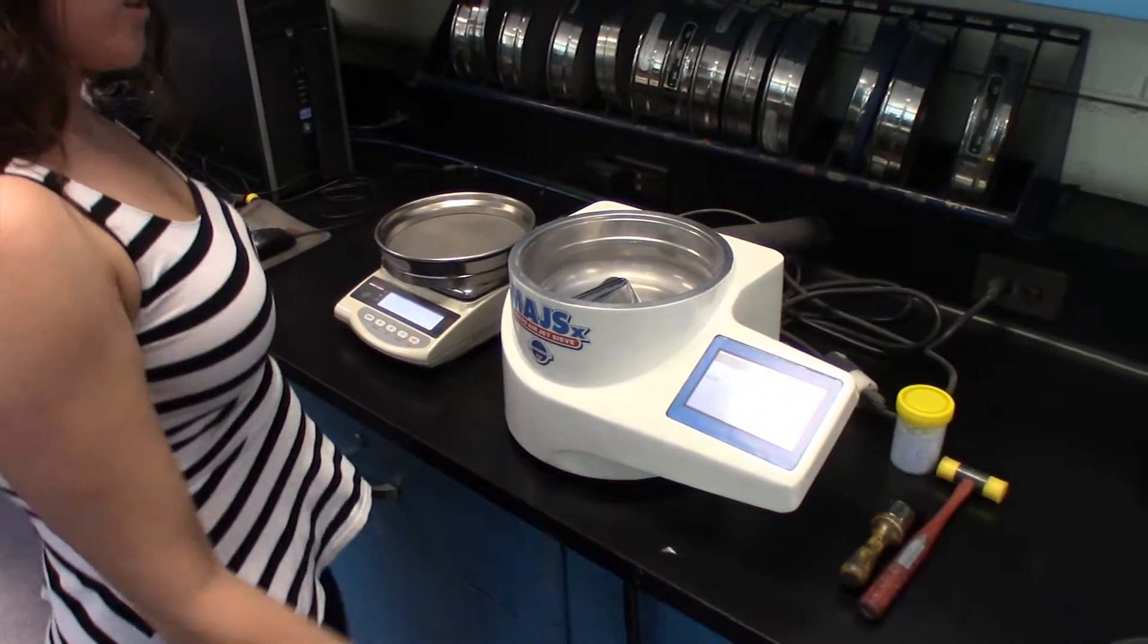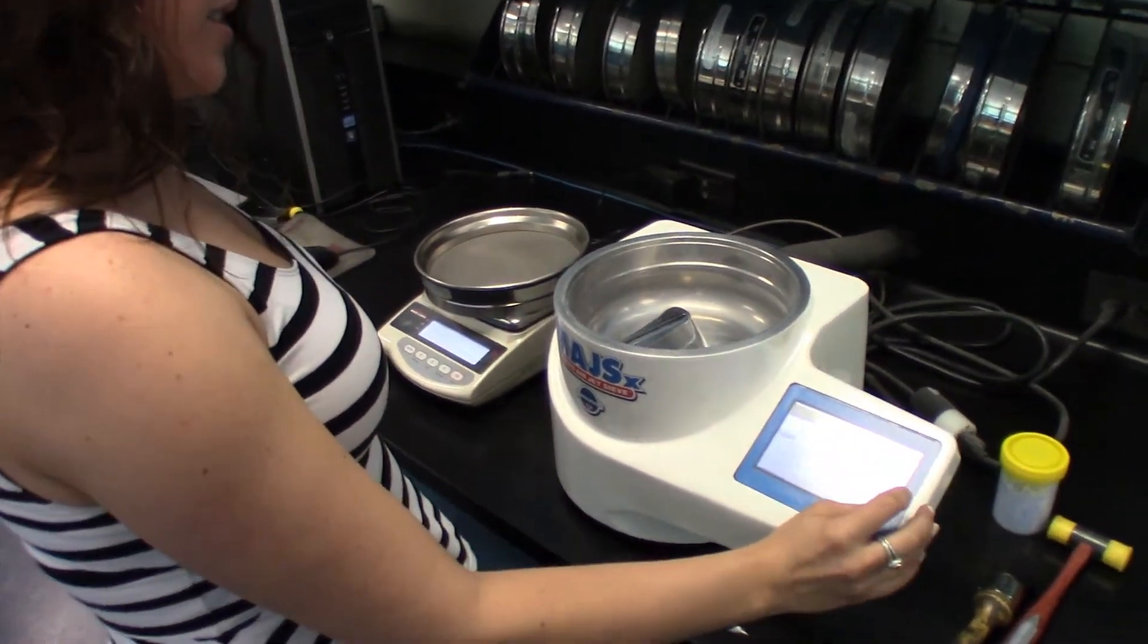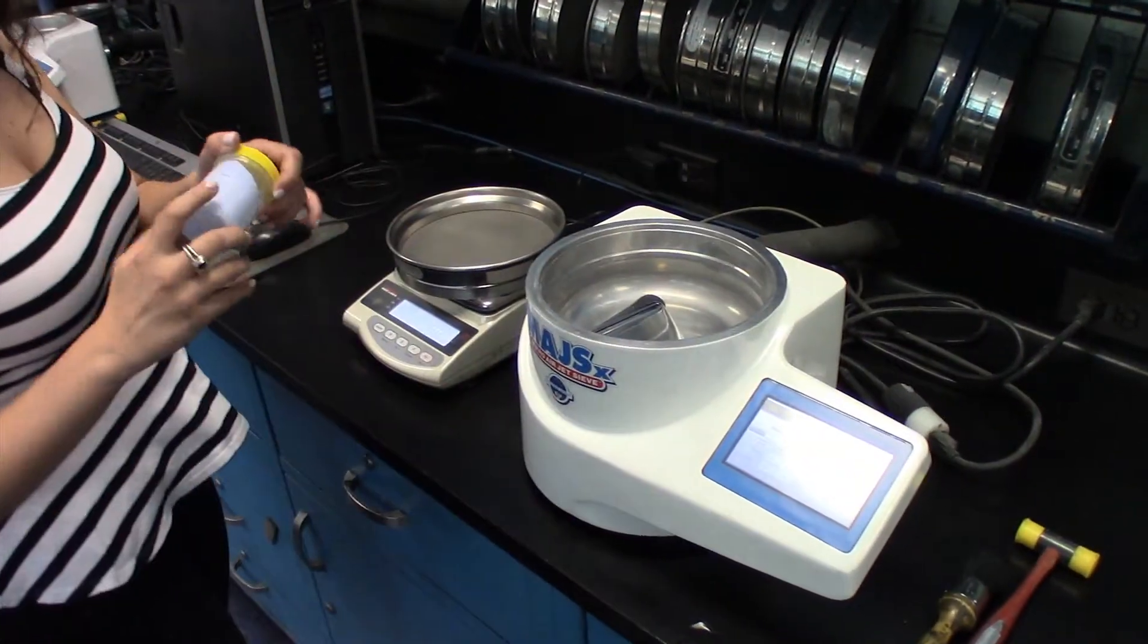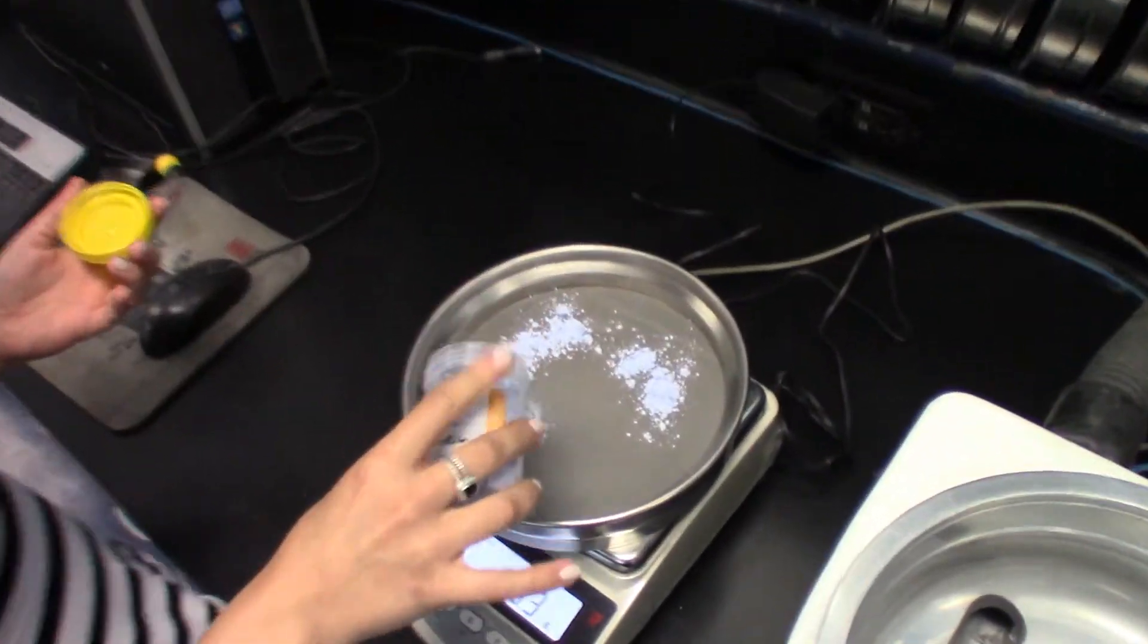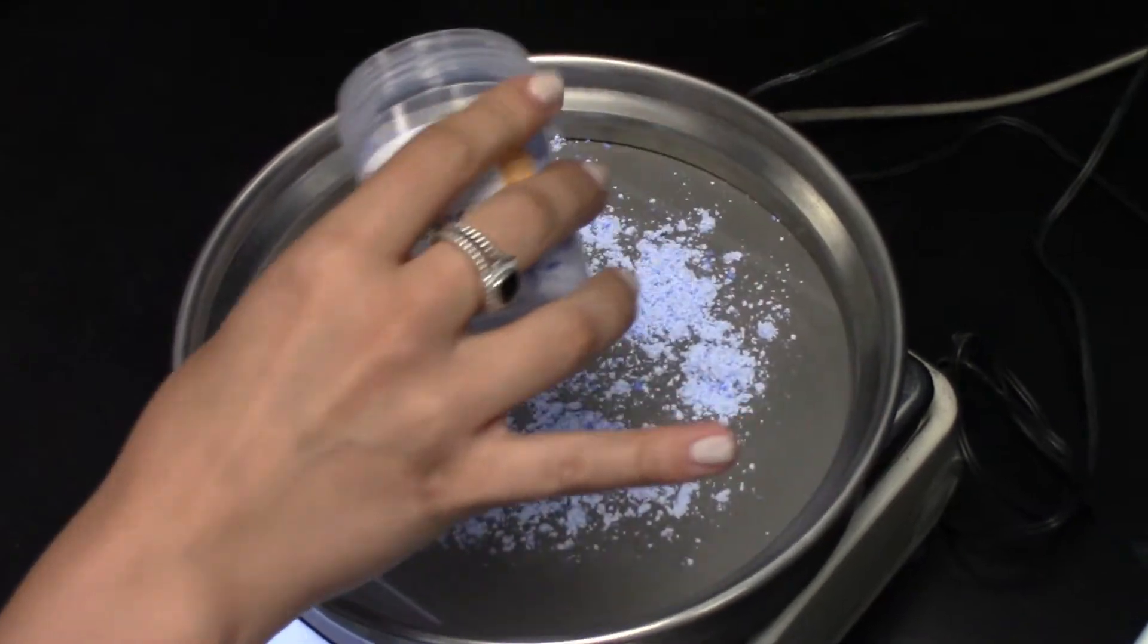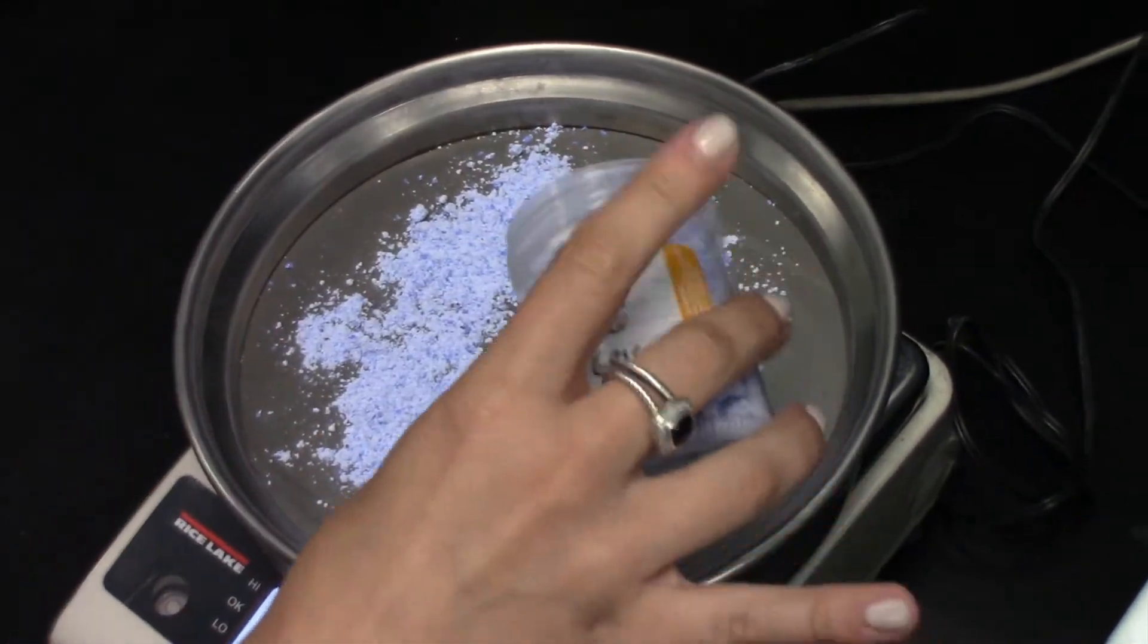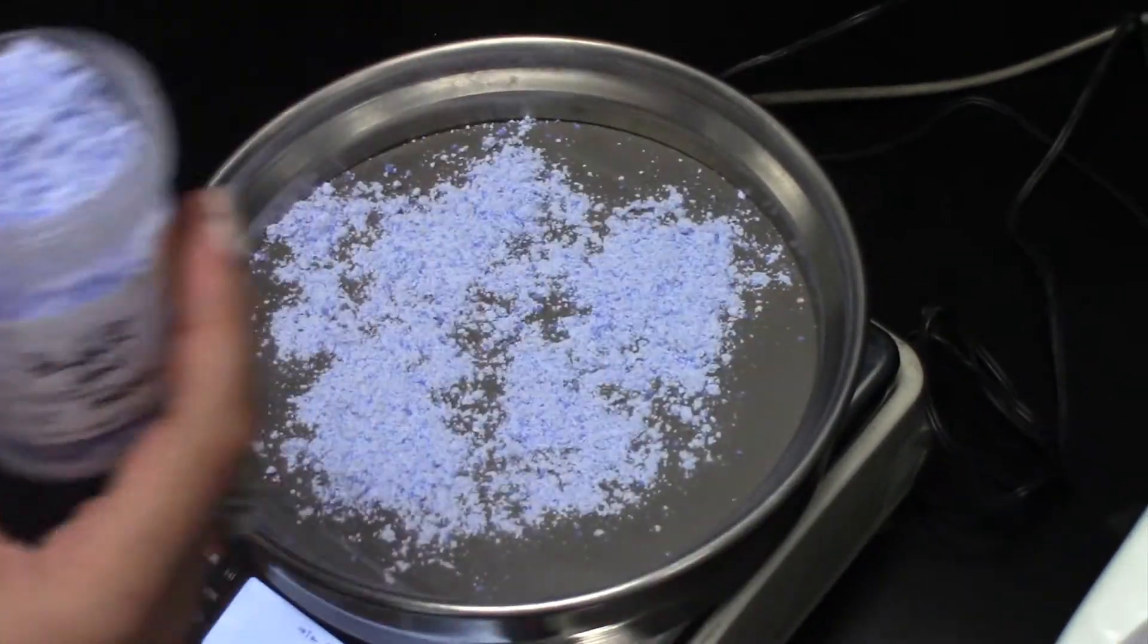Once the scale communicates and is matching, press next. Then I'll add some of my sample. I want to spread it evenly around the sieve screen, that way the sample has a chance to come in contact with the sieve screen.